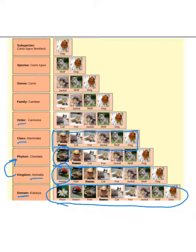Next we have order. So even more specific, we're talking about carnivora. So you've got cats included, but you lose the human. So humans don't belong in that particular order. So we now have cats, foxes, jackals, wolves, and dogs.